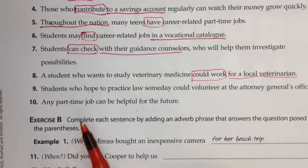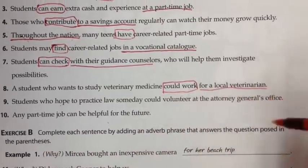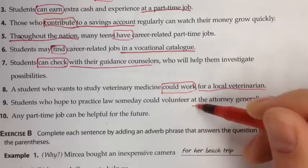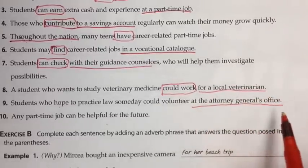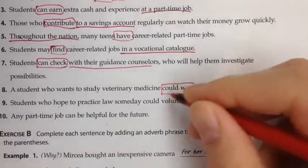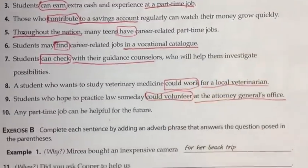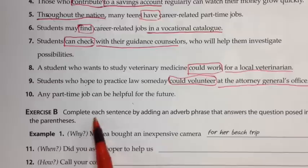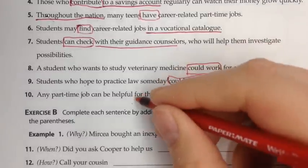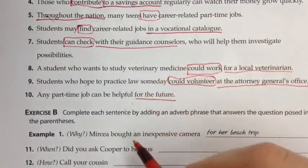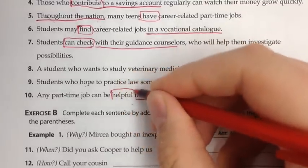Number nine: students who hope to practice law someday could volunteer. Where can they volunteer? At the attorney general's office. Preposition, then object of that preposition — this describes 'could volunteer.' Number ten: any part-time job can be helpful for the future. How can it be helpful, or to what extent can it be helpful for the future? So this describes 'helpful.'